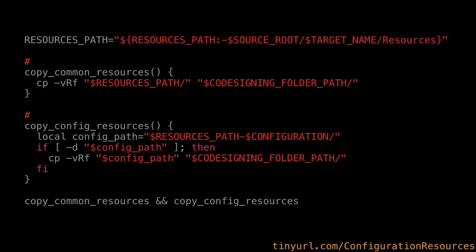There are a few directories — there's the code signing folder path, the built products path. It is quite complicated. If you've ever built something and had to go find why an error was occurring, you'll see these massive path names with all these files. A lot goes into building an application. Some of these are build settings and some are just environments that Xcode sets when it builds your source code. You can Google all these — there's documentation.